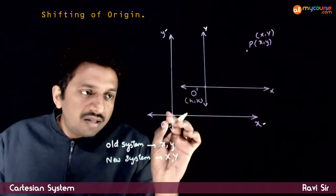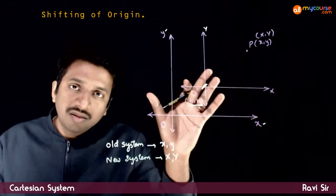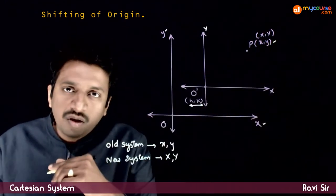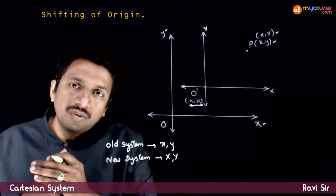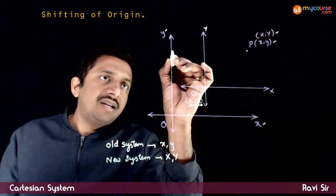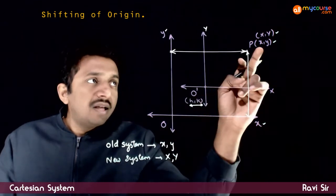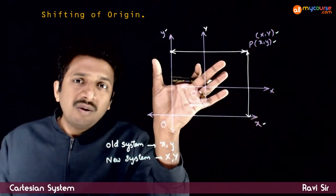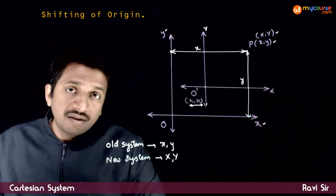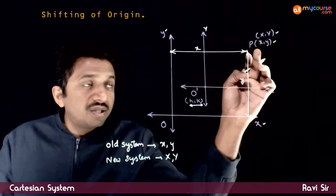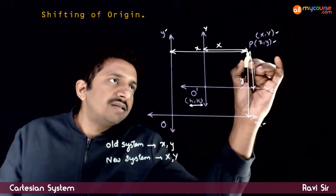Let's say the origin has been shifted to some point h comma k. Now you have a point on this x-y plane. The old coordinates of this point are small x, small y, and the new coordinates are capital X, capital Y. Small x is the distance of this point from the old y-axis, so this total distance is small x, and this total distance is small y. Capital X is the distance of this point from the new y-axis, so this distance is capital X and this distance is capital Y.